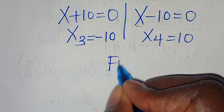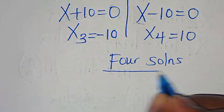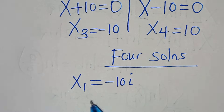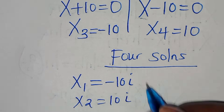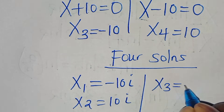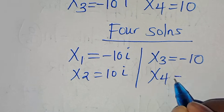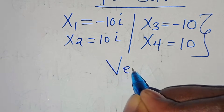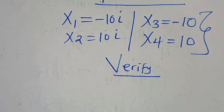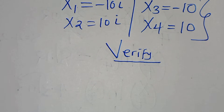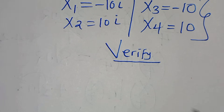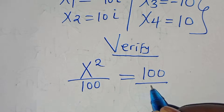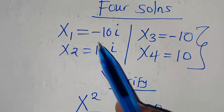So in fact we have 4 solutions. We have x₁ equals minus 10i, x₂ equals 10i, x₃ equals minus 10, and x₄ equals 10. The next step is to verify that these 4 solutions satisfy the equation. Recall we have x to the power of 2 divided by 100 equals 100 divided by x to the power of 2. Let's start with x₁ which is minus 10i.